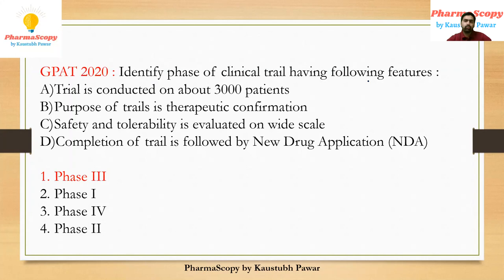The question was: identify the phase of clinical trial having the following features — a trial is conducted on about 3,000 patients, the purpose of the trial is therapeutic confirmation, safety and tolerability is evaluated on a wide scale, and completion of the trial is followed by new drug application. The correct answer is phase three, as phase three is conducted on about 3,000 patients, therapeutic confirmation is done, safety and tolerability is assessed on a wide scale, and after completion of phase three, the new drug application is approved.